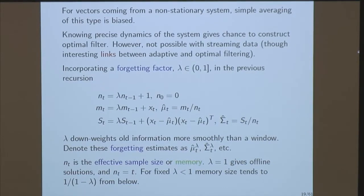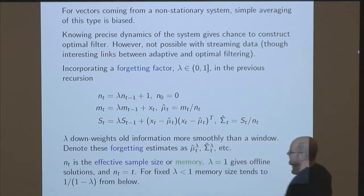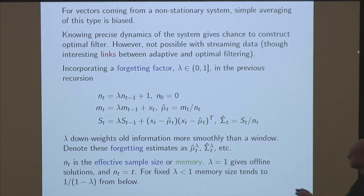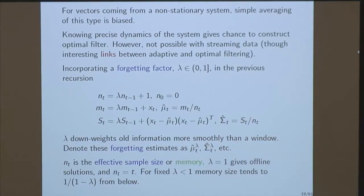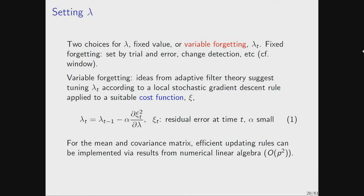This is cheap to do, provided I can guess lambda. Nt, the effective sample size, is a measure of the size of the window being used. If lambda equals one, that's the one-over-N averaging. For fixed lambda less than one, the effective sample size converges to a fixed value. I made a big song and dance about trying to escape from parameters, and I've just introduced another one — so let's see if I can make that go away a bit.